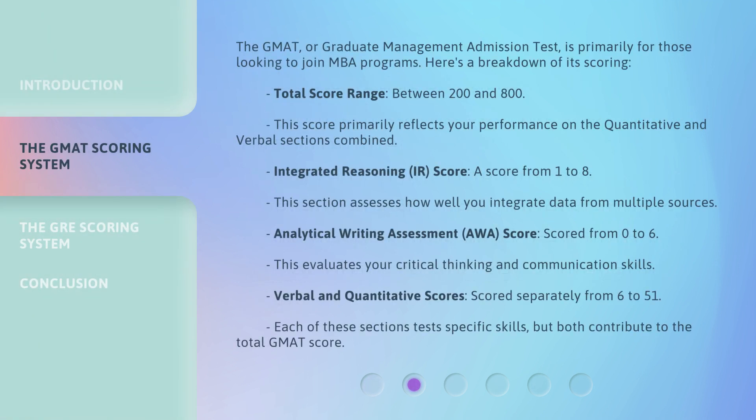The GMAT, or Graduate Management Admission Test, is primarily for those looking to join MBA programs. Here's a breakdown of its scoring. Total score range: between 200 and 800. This score primarily reflects your performance on the quantitative and verbal sections combined.